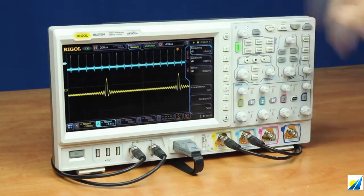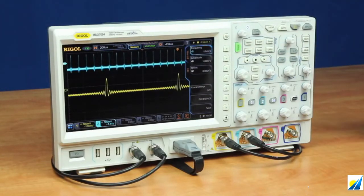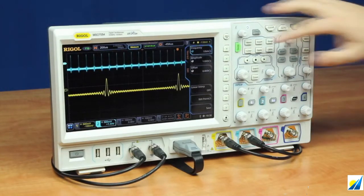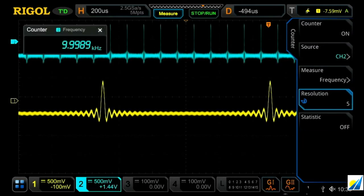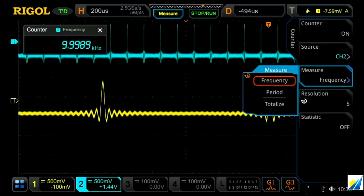Now that we've got these turned on, another useful tool that's built into the instrument is we have our counter function, which can be used to both count the frequency, but it can also be used to measure the period and then the totalizer, so the number of peaks.